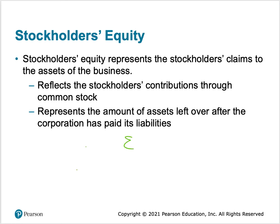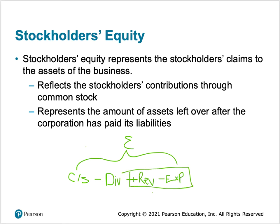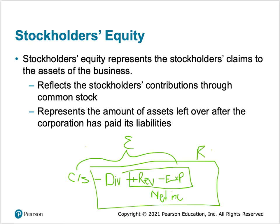When we broke down equity in the accounting equation, we said common stock — everything the shareholders put into the business — minus dividends paid back to common stockholders, plus revenues minus expenses. Revenues minus expenses gives us net income or loss. Including dividends and net income gives us retained earnings. That's what we're reporting in the stockholders' equity section: common stock and retained earnings.